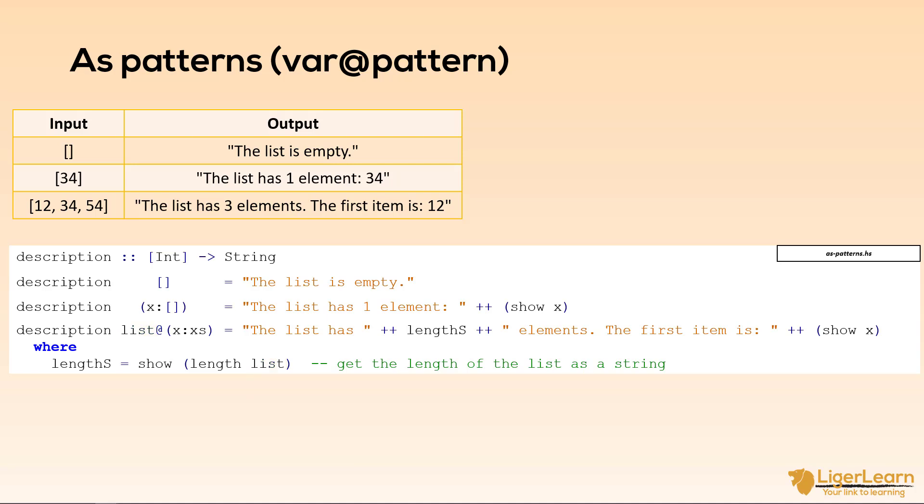Then in the function body we refer to lengthS and also called show x to get the first item in the list as part of our string. We concatenate the pieces together just like before to get our final string which will match our desired output.